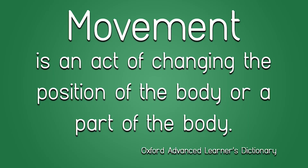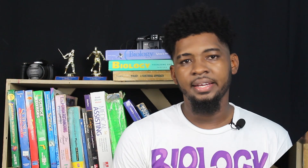We start with a look at Movement. Movement is an act of changing the position of the body or a part of the body. Most animals can move their whole bodies from place to place — we call that locomotion. Plants and some animals are only able to move parts of their bodies. Plants move in response to things like sunlight, water, and gravity. In humans and other animals, we use muscles in order to move our bodies.